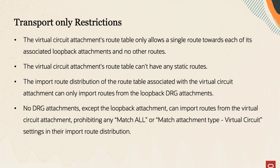When transport mode is activated, it introduces several constraints. The route table for the virtual circuit attachment is limited to a single route per associated loopback attachment, with no additional routes allowed. Static routes are prohibited in the virtual circuit attachment's route table. The route table import route distribution linked to the virtual circuit attachment is restricted to importing routes solely from the loopback DRG attachment. Only the loopback attachment is permitted to import routes from the virtual circuit attachment, preventing the use of match-all or match-attachment-type virtual circuit settings.